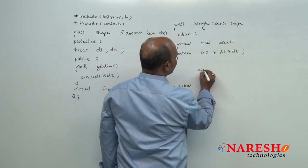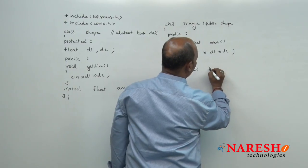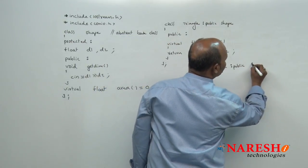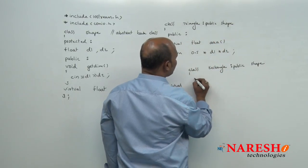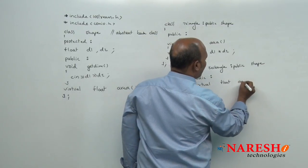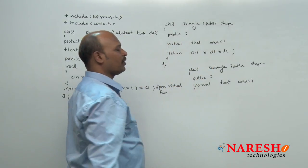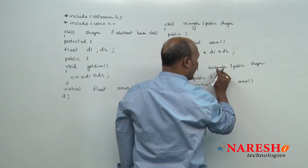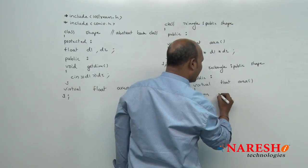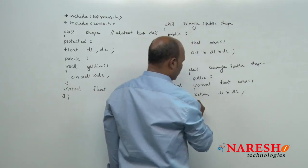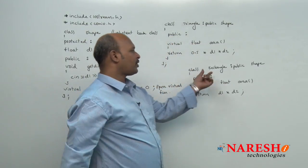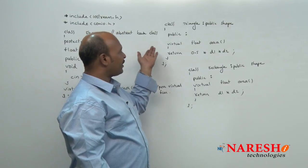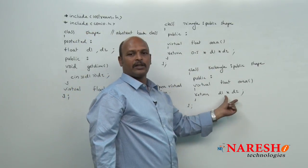Next, another class — class Rectangle, derived from public Shape. Here I also redefine the area function: float area() { return d1 * d2; } because rectangle area is length into breadth. Close the function and close the Rectangle class. Triangle area formula is half BH, so we use 0.5 * d1 * d2, while rectangle area is length into breadth, so d1 * d2.